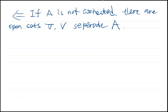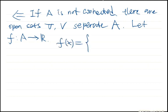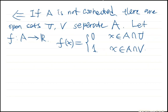Now we define a function f defined on A whose value is given as follows: f(x) equals 0 when x belongs to the intersection of A and U, and f(x) equals 1 when x belongs to the intersection of A and V.